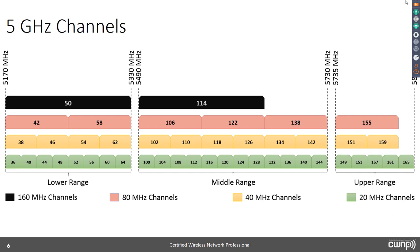In 5 GHz with 802.11ac we now have four channel widths: 20, 40, 80, and 160 MHz. I've chosen traffic-light colors strategically: green means go, yellow means caution, red means stop, and black means the light is out. For 20 MHz channels — green — you don't have to worry much, just plan well. For 40 MHz — yellow — you can use them if you plan well, but always ask: am I boosting throughput for one or two stations while hurting 70 others?